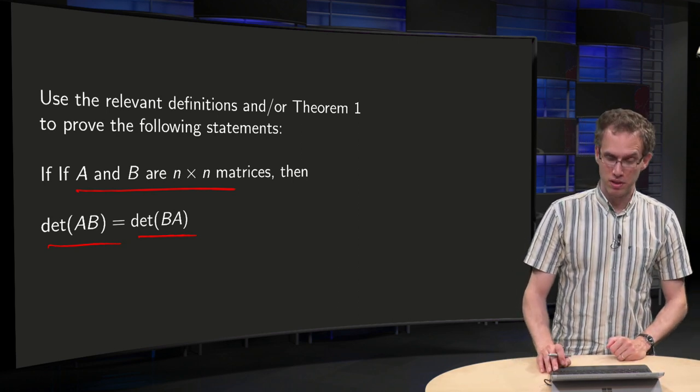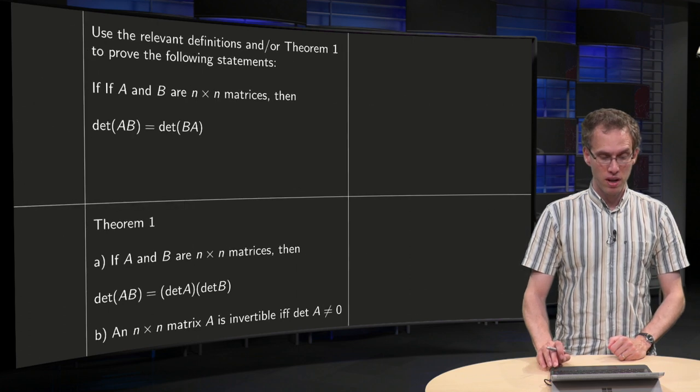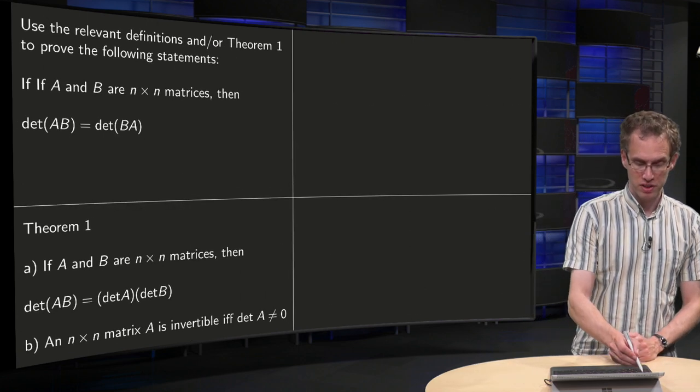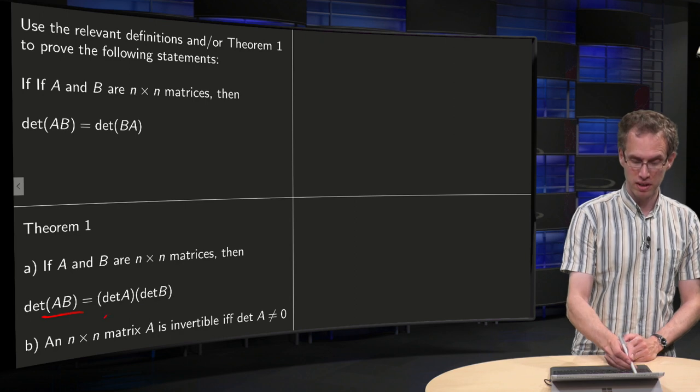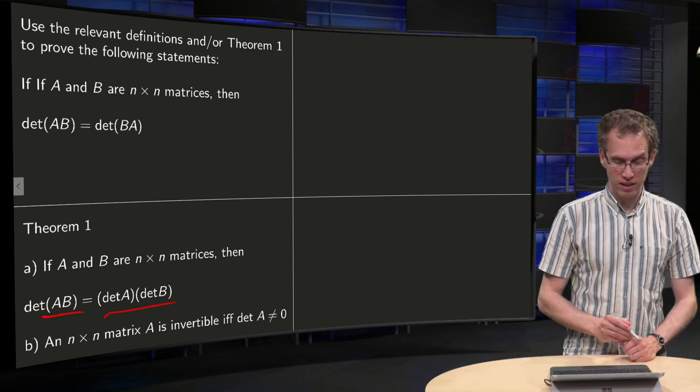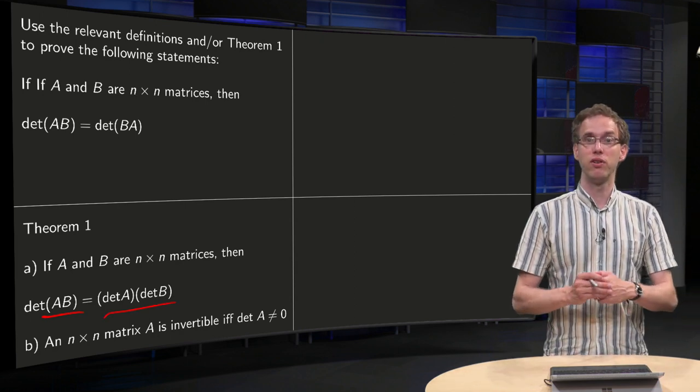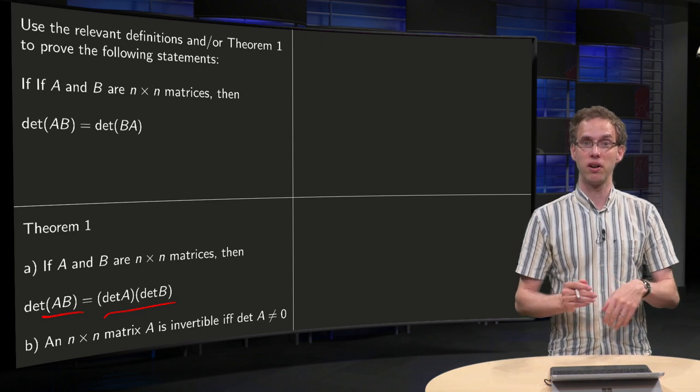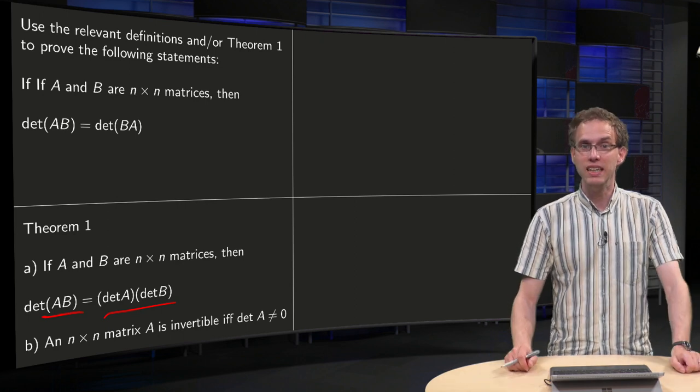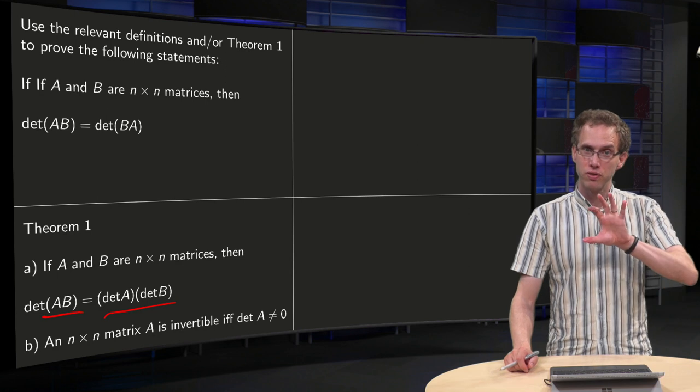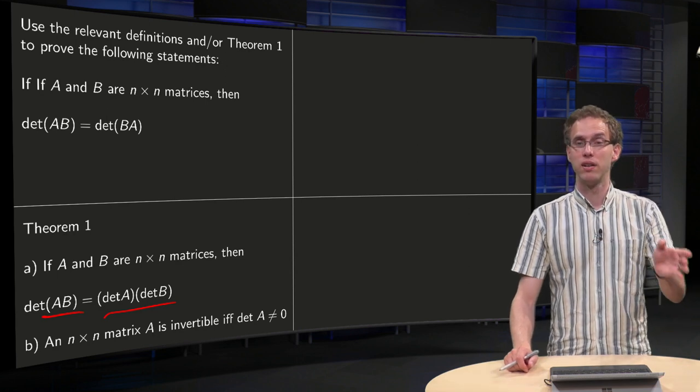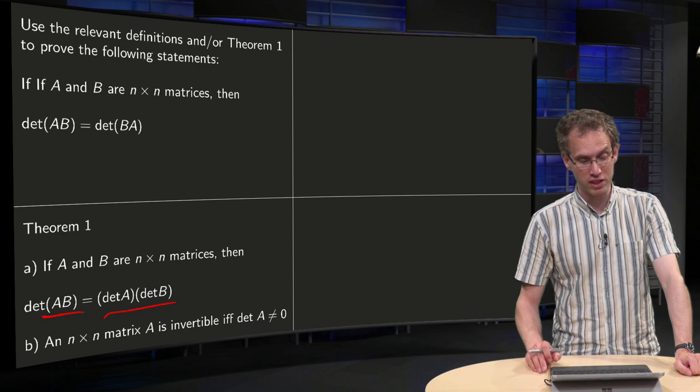We can use a theorem if we want. What does the theorem say? For square matrices we have that det(AB) equals det(A) times det(B), and a matrix is invertible if its determinant is non-zero. It's not said that we need those, just we can use them if we like. Apart from the definitions, we can always use the relevant definitions.